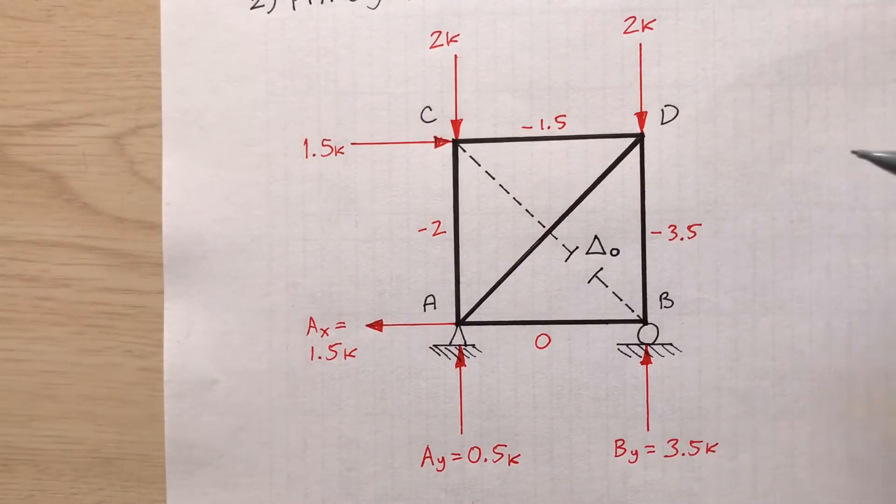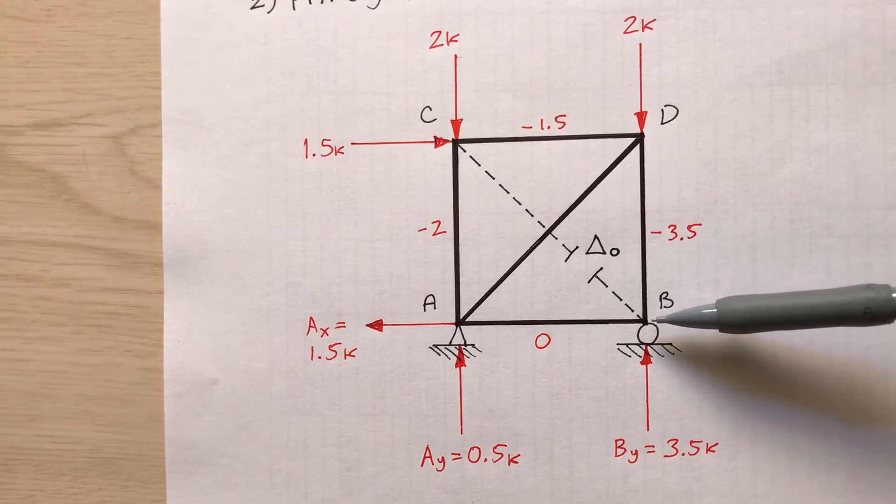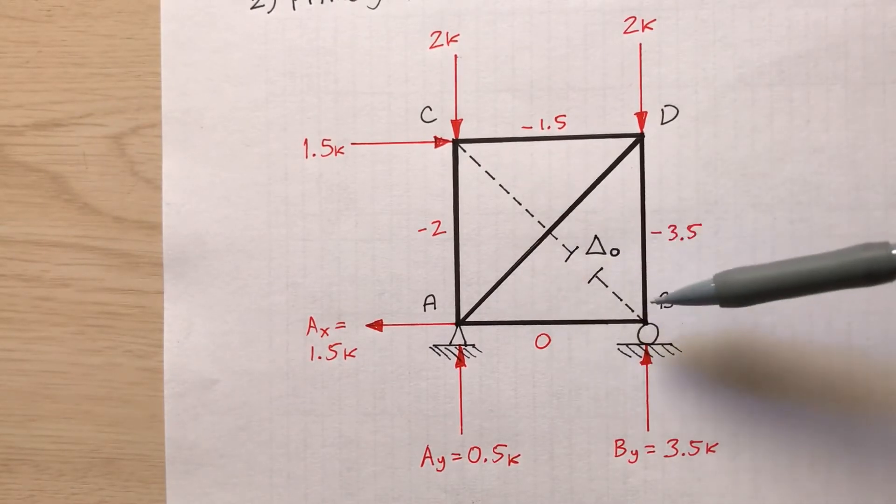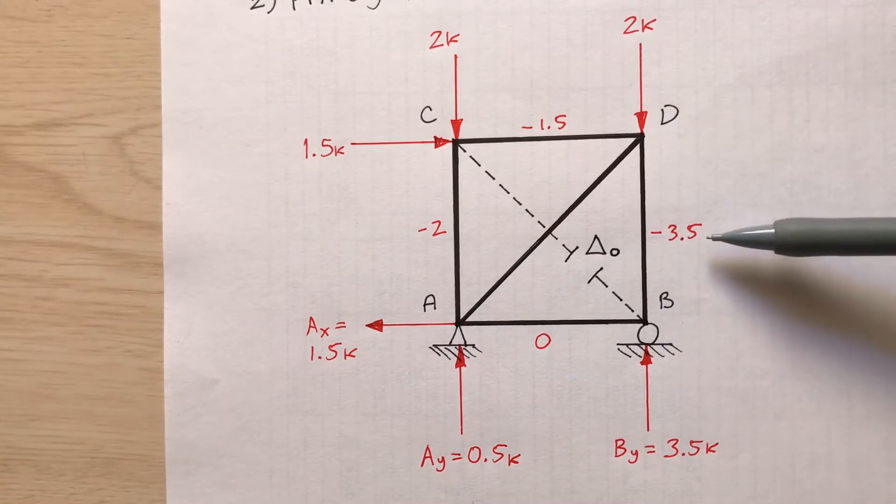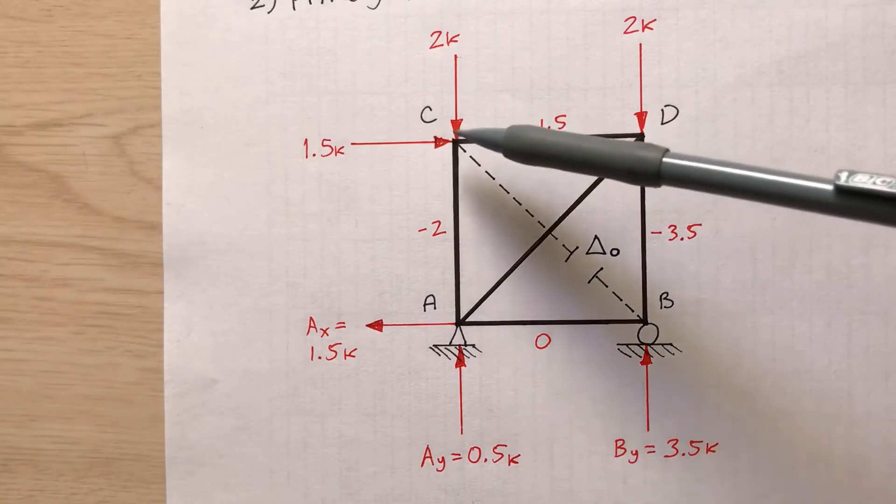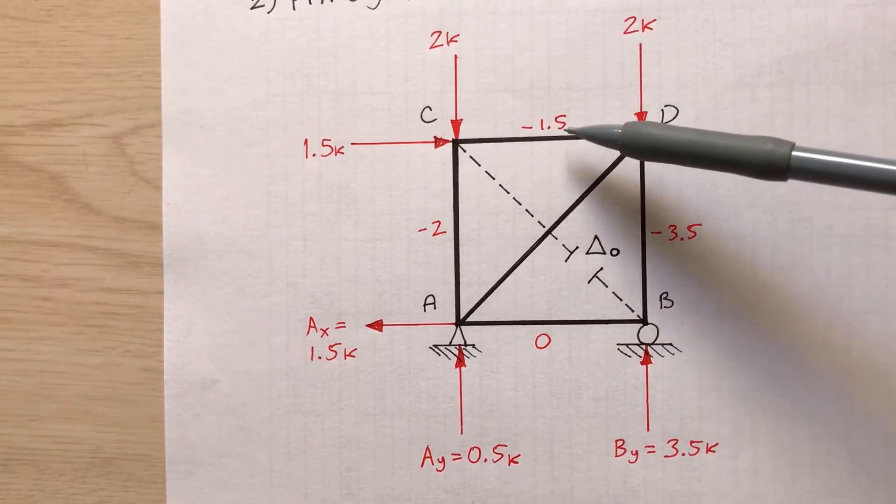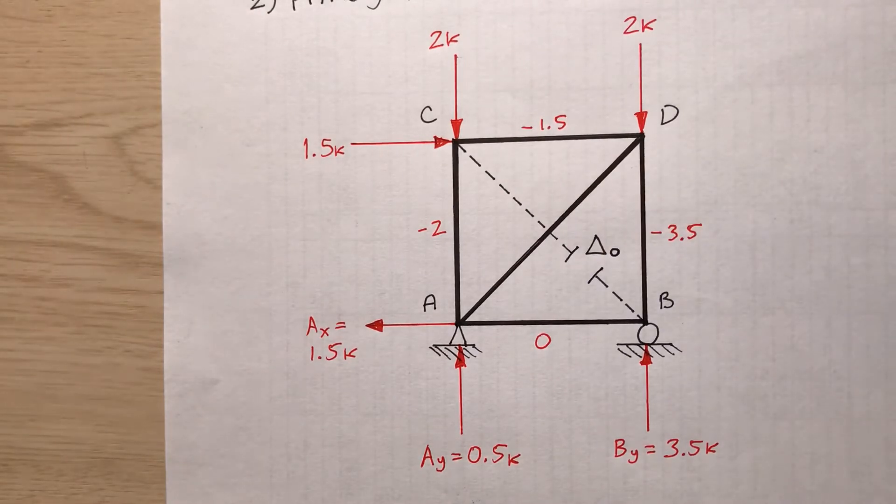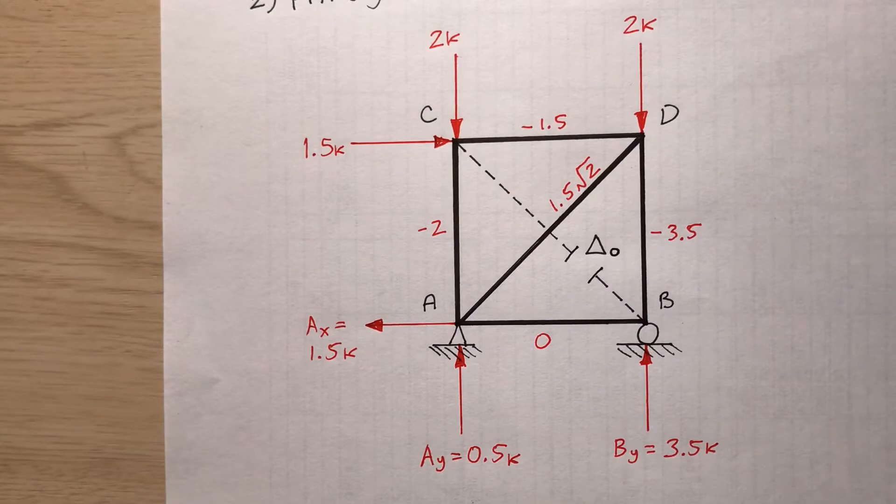I want to determine what the internal bar forces are based upon cutting through member BC. And I also can determine by inspection what some of these internal bar forces are. For example, if I examine joint B, there's no horizontal force, meaning that AB will be zero. Also, there's no bar BC to help carry the vertical load, and so BD, that'll be 3.5 in compression. Similarly, by analyzing joint C, 1.5 acting to the right. So CD, 1.5 kips in compression. AC, 2 kips in compression because that 2 kips acting down. So how do I determine the internal force in bar AD? I could analyze joint A or joint D. 1.5 square root of 2. So that member AD is in tension, 1.5 times the square root of 2.